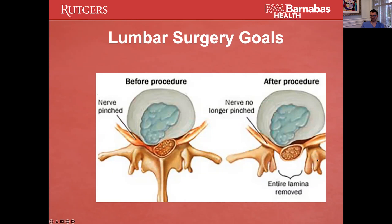Here is basically the surgical intervention. A laminectomy involves removal of the spinous process and removal of the lamina. The lamina is the bone that transitions off laterally from the spinous process and covers the thecal sac or the dura. When you drill that off and carefully remove it, it provides decompression and gives the nerve roots room to breathe.